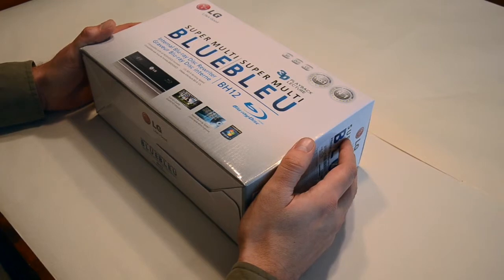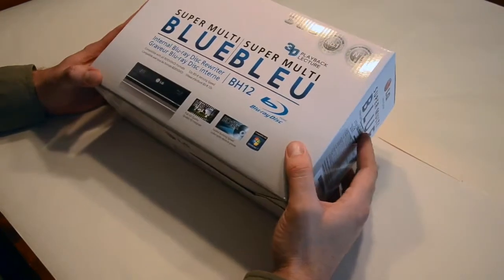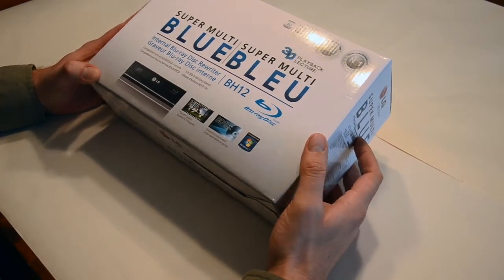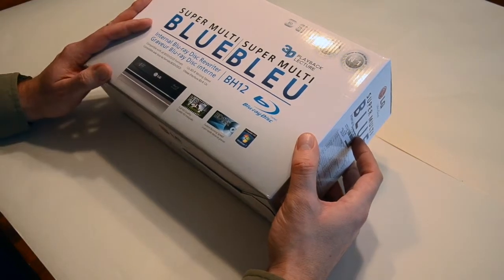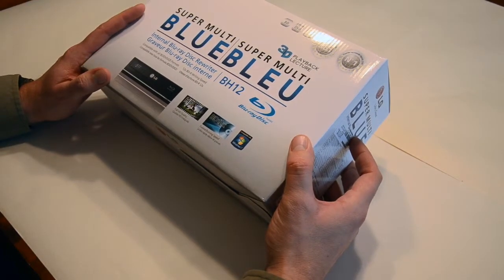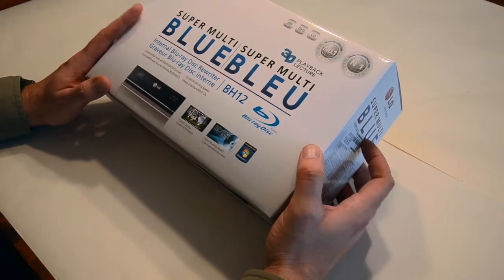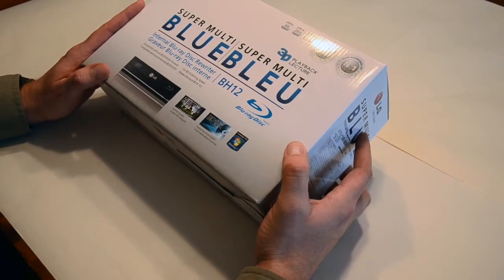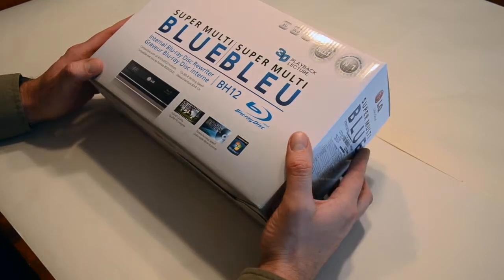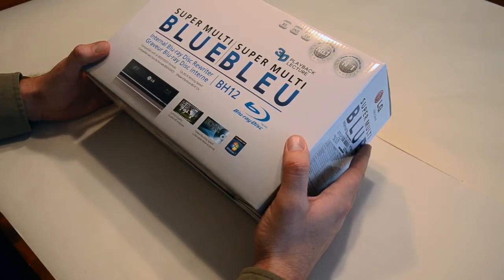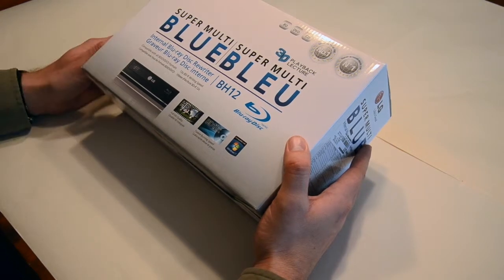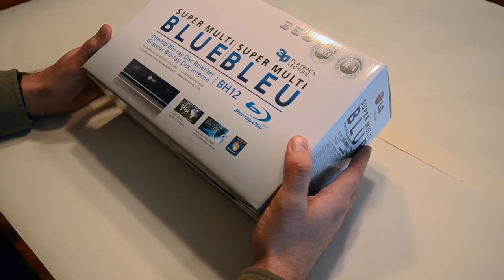Here we have the blu-ray reader writer for the hackintosh. It's an LG BH 12. The choice for this was price - this was a good price. From what I've read, this is compatible. Although many hackintosh sites recommend Sony-based DVD or blu-ray drives, people have got this to work, so I decided to go with this one.